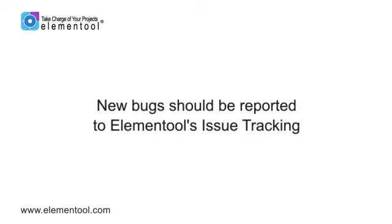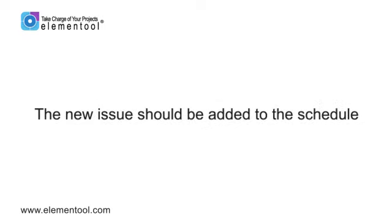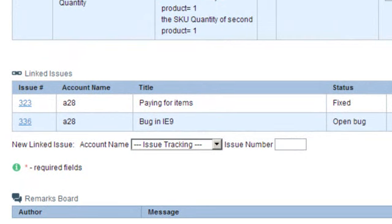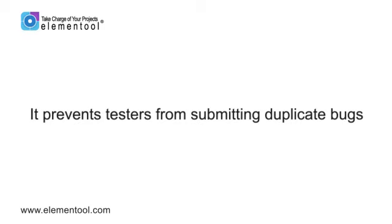In the event that a bug is discovered during testing, the tester should submit a new issue to the issue tracking system that describes the bug. The new issue should be assigned to the project manager, who needs to add it to the iteration plan and schedule, and then it will be assigned to the appropriate team members for fixing. Elementool enables you to link bugs to tests, making it easy to track the progress of reported bugs and preventing testers from submitting duplicate bugs for the same test.